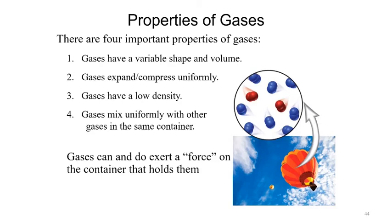With that, our properties of gases — we get four important properties, most of which we've already discussed. Some of the big ones that are new to us would be low density, which makes sense: if there's lots of open space within a given volume, we have a very small mass, so our density — mass over volume — would suggest low densities.